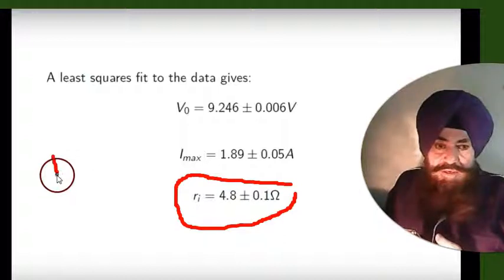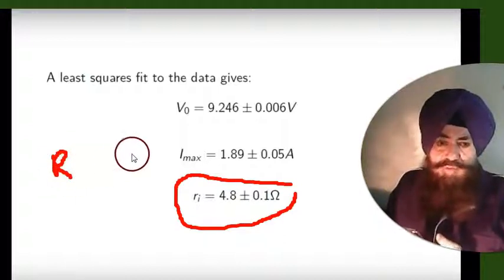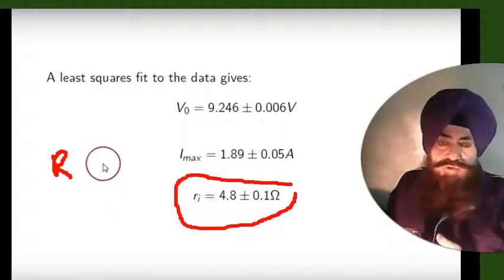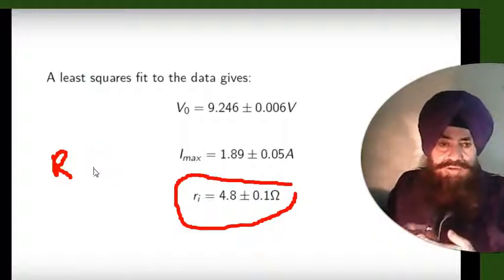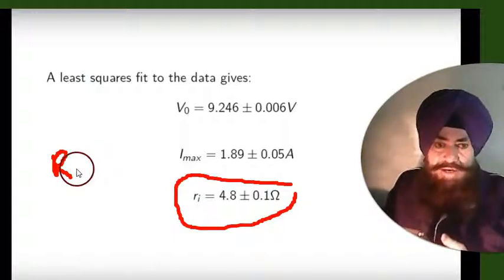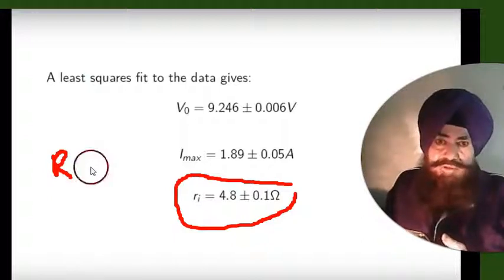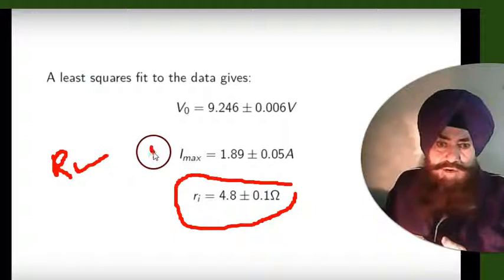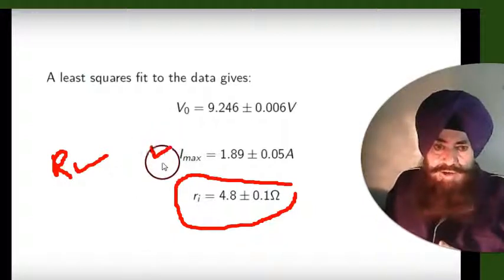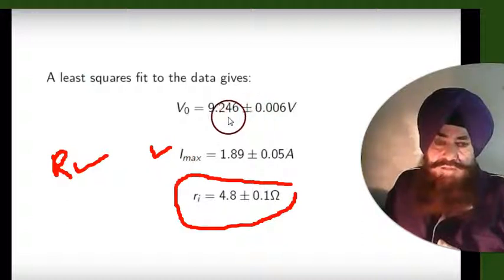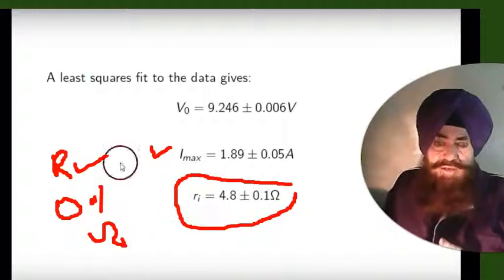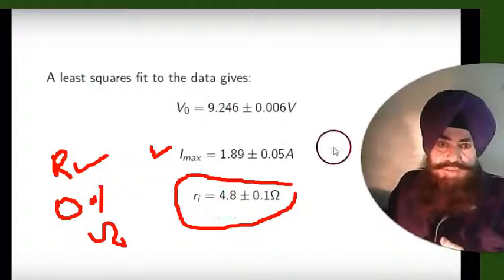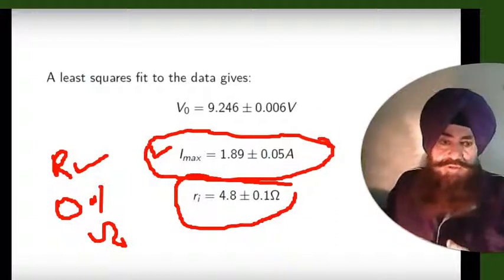If we put external resistance very small — not infinity — more current will be drawn, meaning maximum current is drawn. Choose R very small, like 0.1 ohm, then add small ri and divide the voltage by the total resistance to get the maximum current drawn.